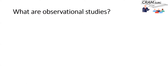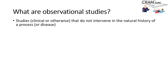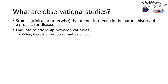Firstly, we should talk about what observational studies are, because this is where we use propensity score matching. These are studies, clinical or otherwise, that do not intervene in the natural history of a process of disease. They evaluate relationships between variables — specifically variables that come under the category of exposure and variables that come under the category of endpoints or outcomes.